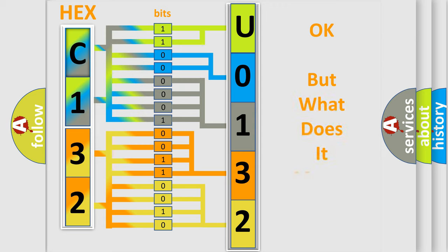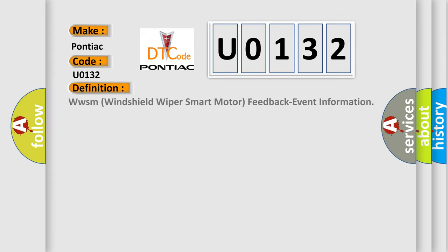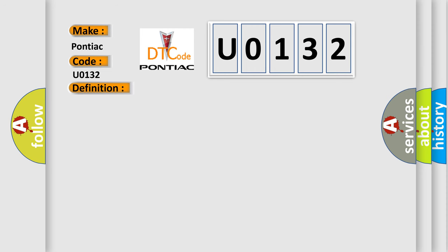We now know how the diagnostic tool translates received information into a more comprehensible format. The number itself does not make sense to us if we cannot assign information about what it actually expresses. So, what does the diagnostic trouble code U0132 interpret specifically for Pontiac car manufacturers? The basic definition is: WWSM windshield wiper smart motor feedback event information.